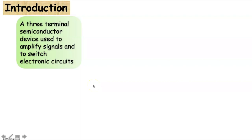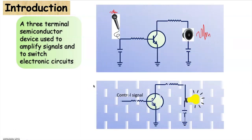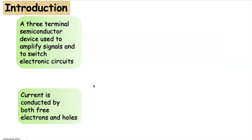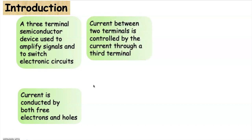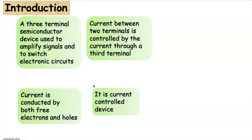The bipolar junction transistor, or BJT, is a three-terminal semiconductor device used to amplify signals and to switch electronic circuits. As the current is conducted by both free electrons and holes, they are known as bipolar devices. In a BJT, the current between two terminals is controlled by the current through a third terminal. Therefore, they are known as current-controlled devices.